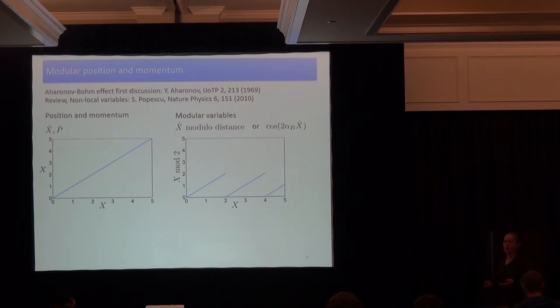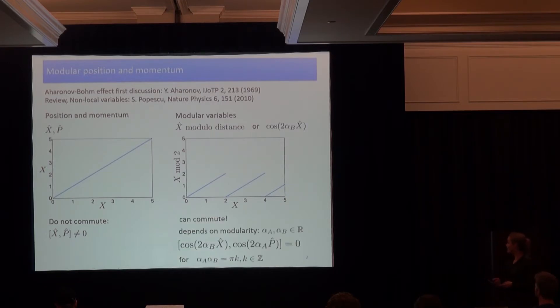A similar type of modularity we get by just plugging in these operators into trigonometric functions with some pre-factors. We learned very early in our quantum mechanics courses that the position and momentum operator, no way that they ever commute, but suddenly these modular versions, they can actually commute, but it depends on their pre-factors, on their length scales. So for some pre-factors they commute, while for others they anti-commute.